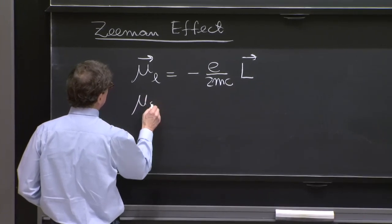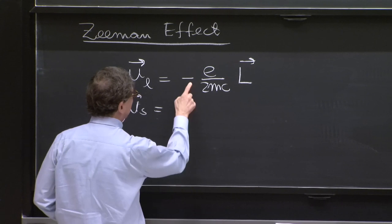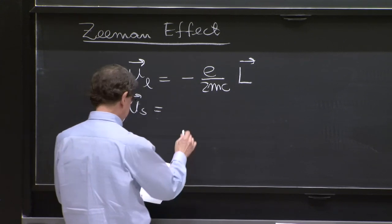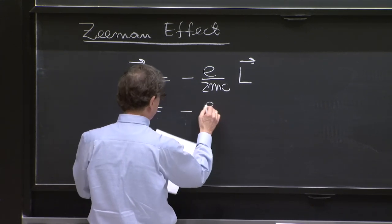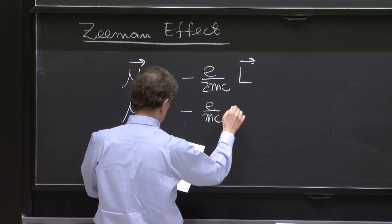And of course, there is the magnetic moment due to the spin that has a factor of 2 here, this g factor we've discussed before.